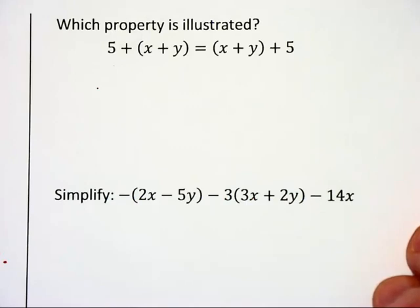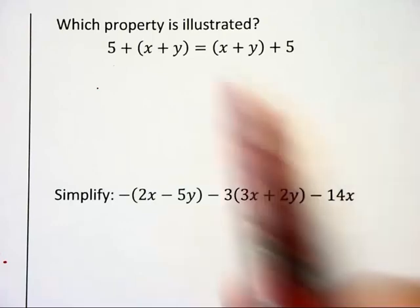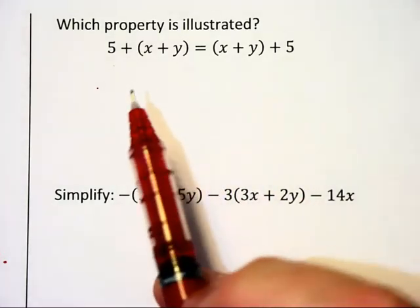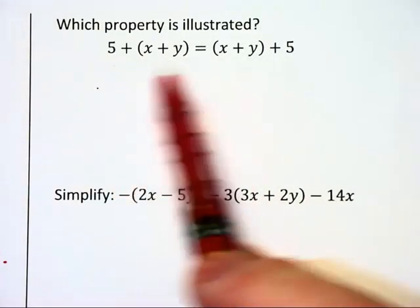I have a problem here asking which property is illustrated, and this is a tricky problem. Because you see parentheses and want to say this is the associative property. But with the associative property, the order stays the same.